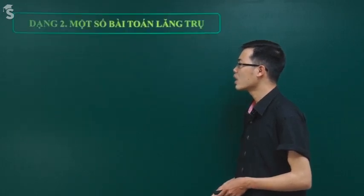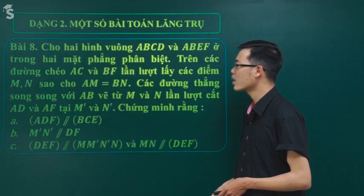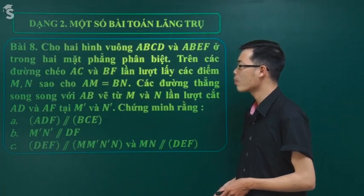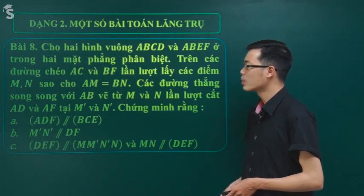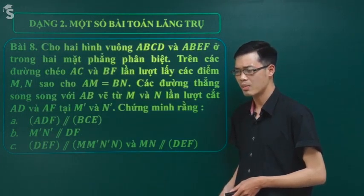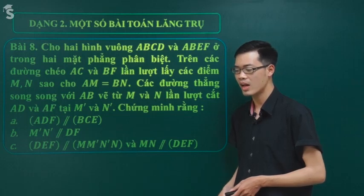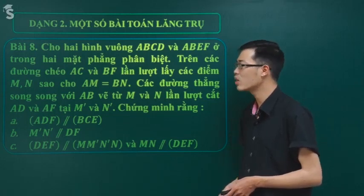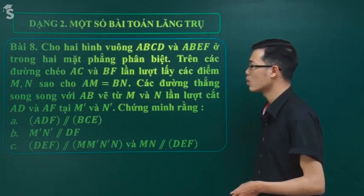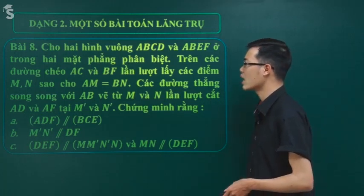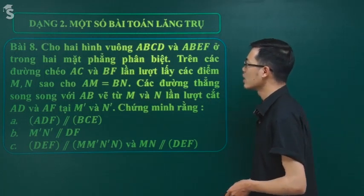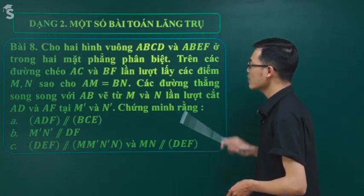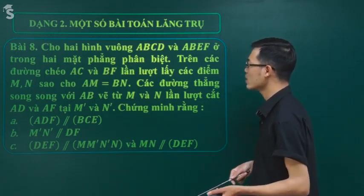Bây giờ Kem sẽ ghi cho thầy bài tập nhé - bài 8. Tiếp nối với dạng 1, chúng ta đang dừng ở bài 7, chúng ta viết luôn đây là bài 8 cho liền mạch.